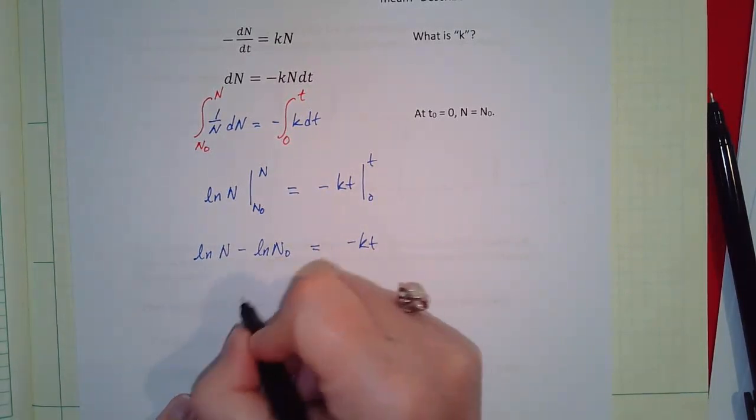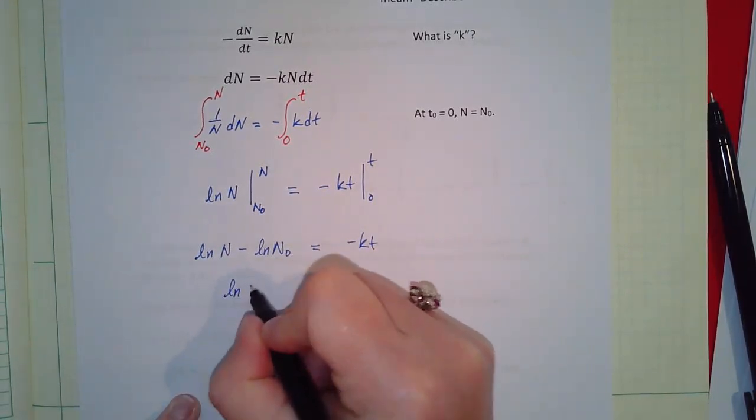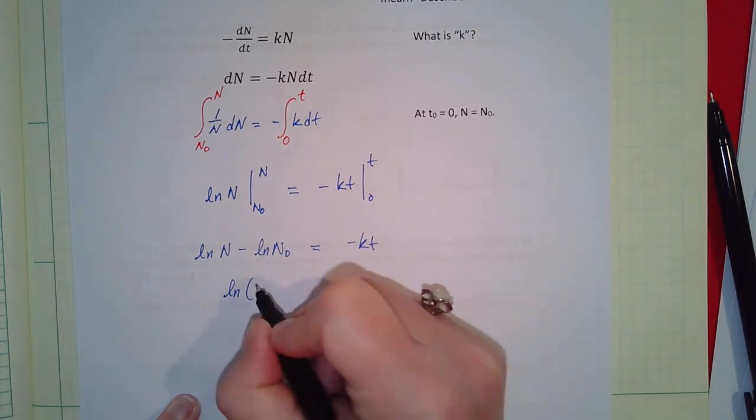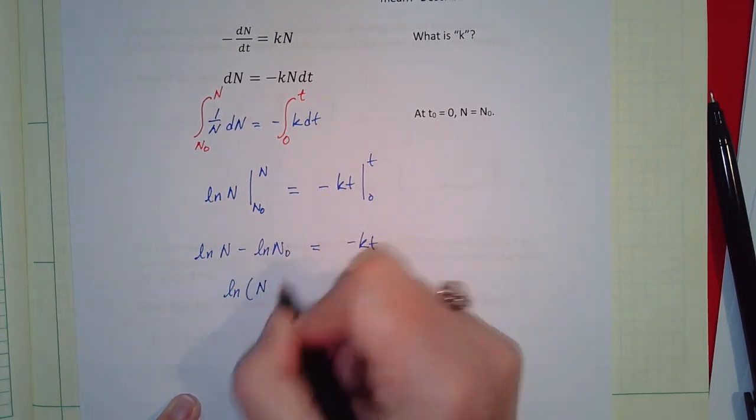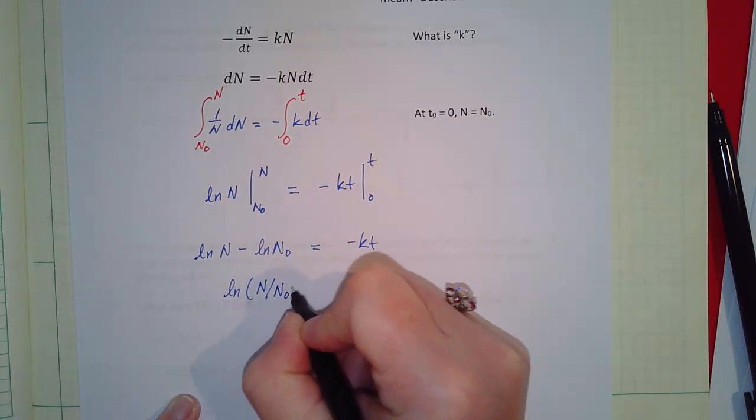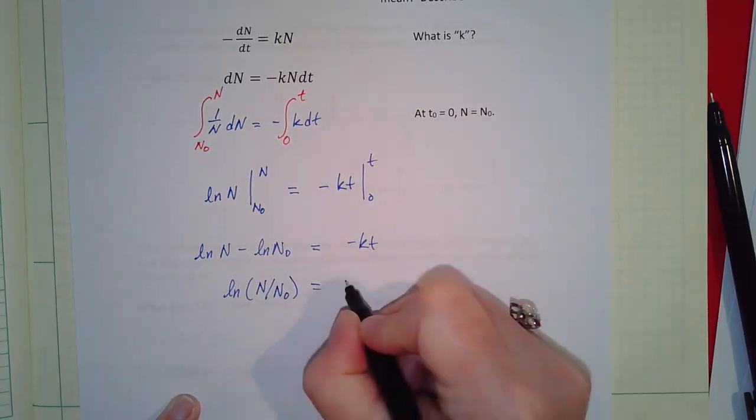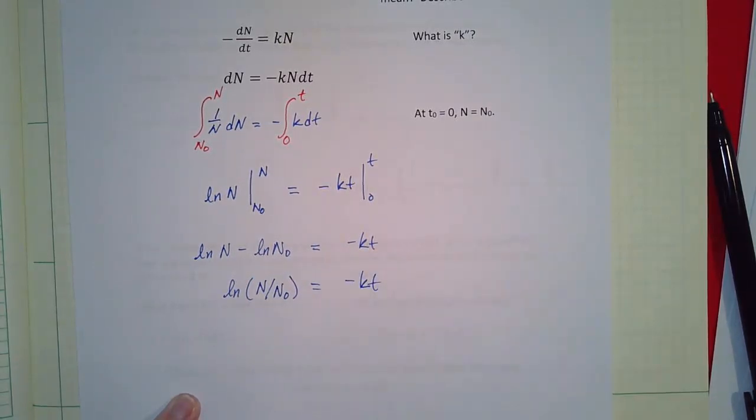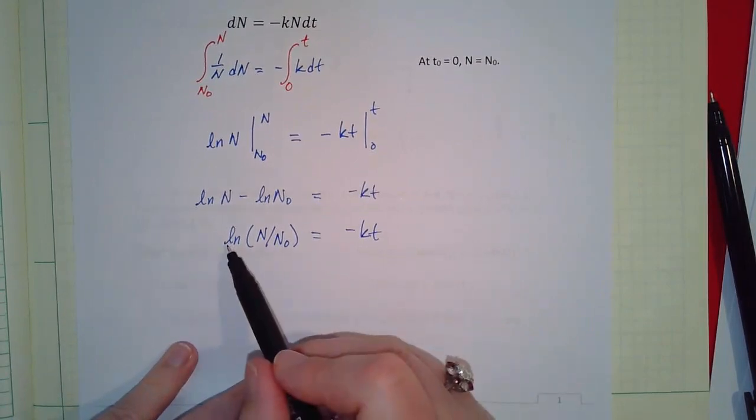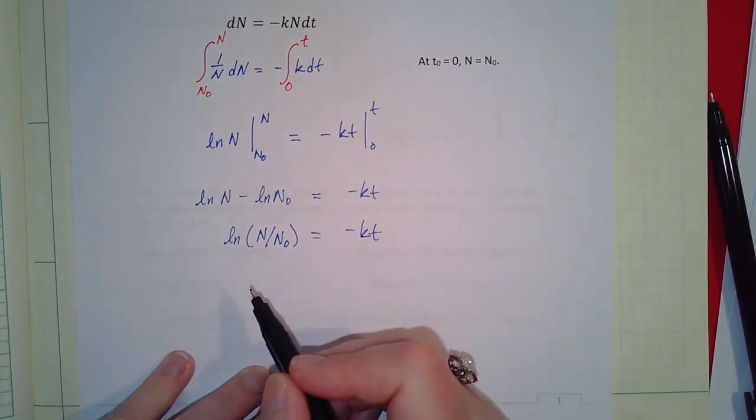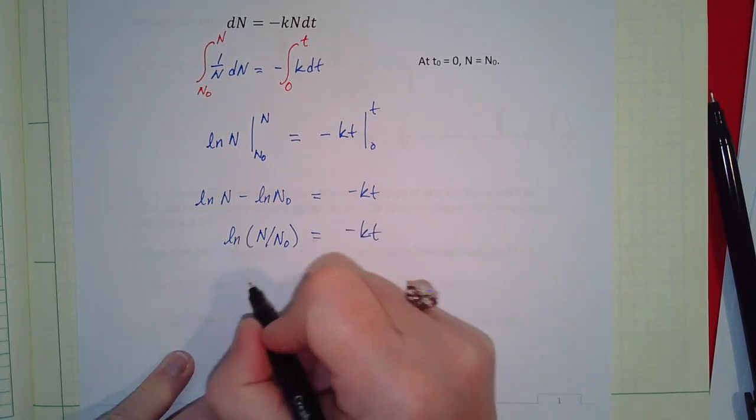And if we remember our math, that minus means divide by if we bring them all into the same natural log. Okay, now to get rid of the natural log we're going to raise both sides e to the this, and so e to the natural log is just N over N naught equals e to the minus kt.